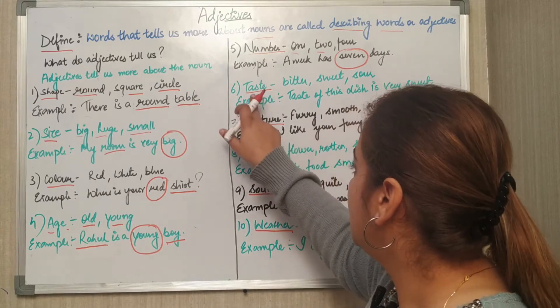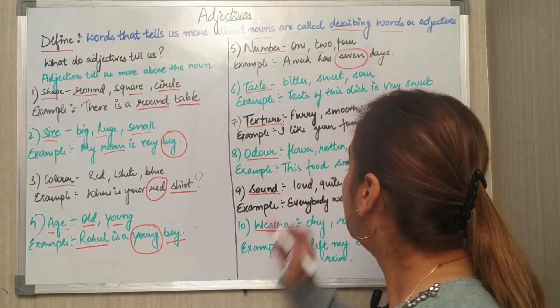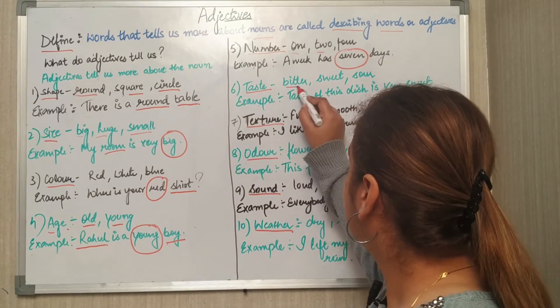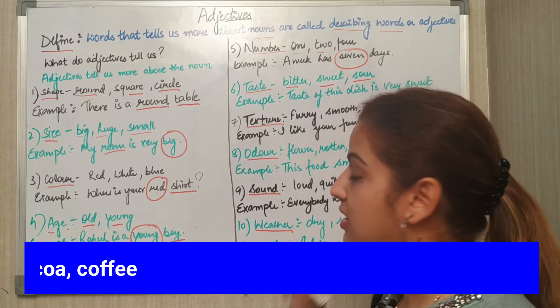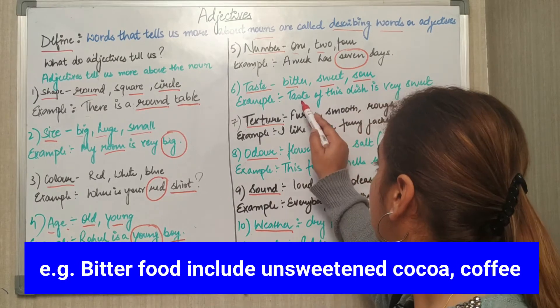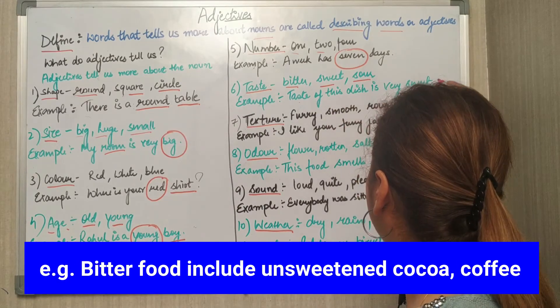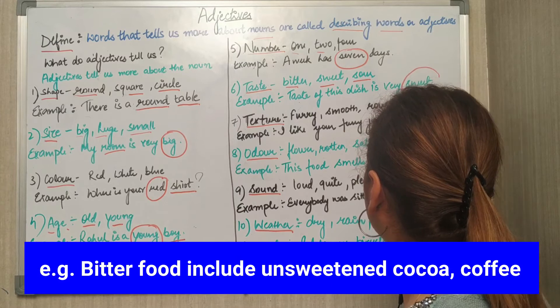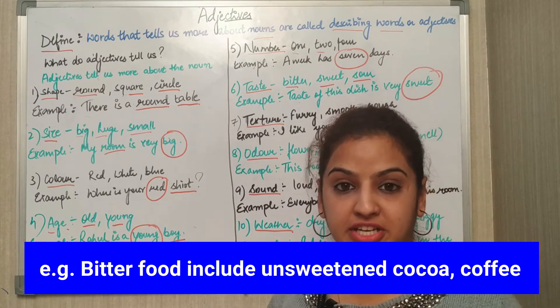Next comes taste. Taste could be bitter, sweet, or sour. Example: The taste of this dish is very sweet. Here 'sweet' is an adjective.